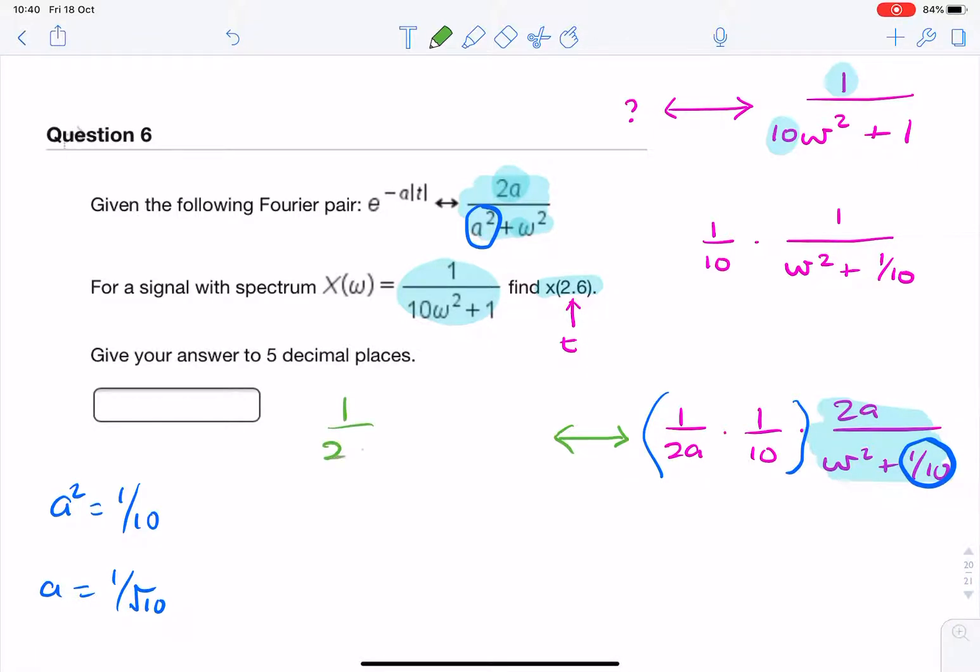It should be 1 over 2a times 1 over 10 times that, which is simply e to the minus a absolute value of t.